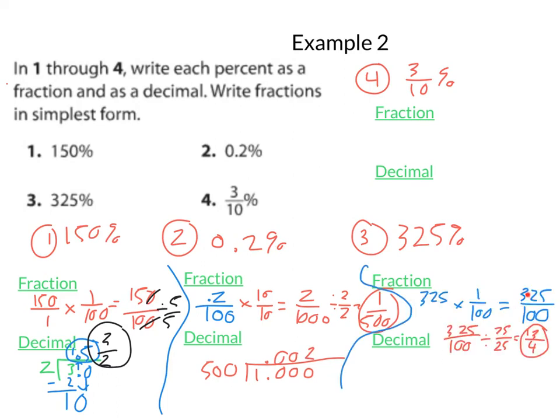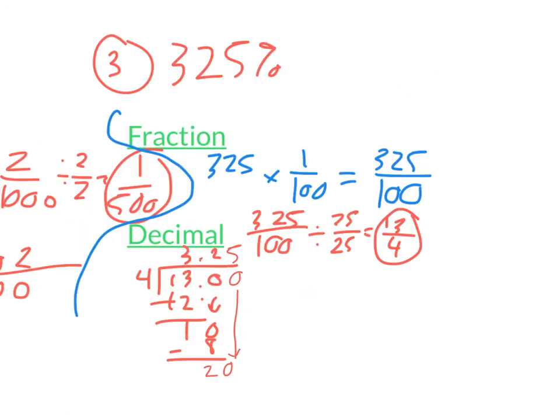Here we have 325 hundredths. As a fraction, I can't leave it like that. I can simplify it. Therefore I divide the top and bottom by 25. My answer is 13 fourths. The decimal here is 3 and 25 hundredths. You may notice that an easier way to make the decimal instead of dividing would be to just look at the percent and to move it over one, two, and that is the decimal, if you're noticing the trend.